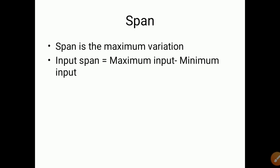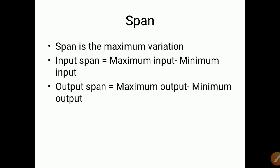Now we will study span. Span is the maximum variation — maximum input minus minimum input. Similarly, maximum output minus minimum output is called output span. Taking the previous example with range 0 to 800 degrees Celsius, the span is 800 minus 0, which equals 800. So 800 is the span of that sensor — the difference between maximum and minimum.